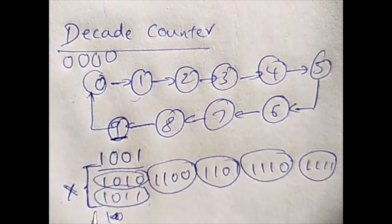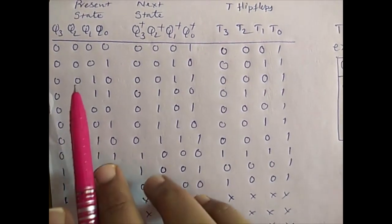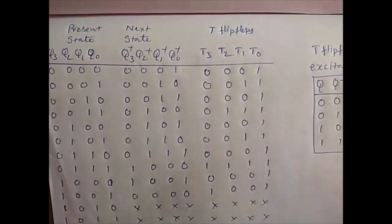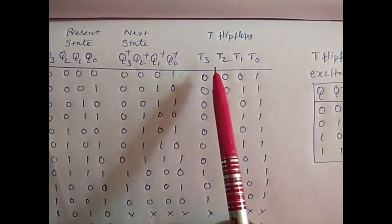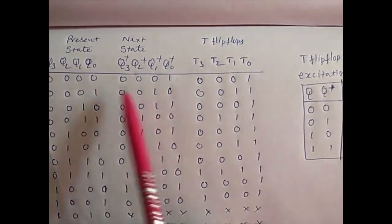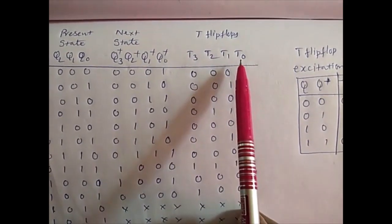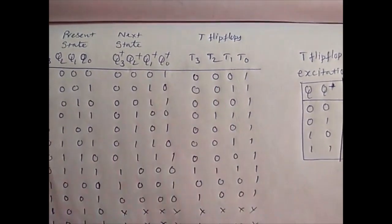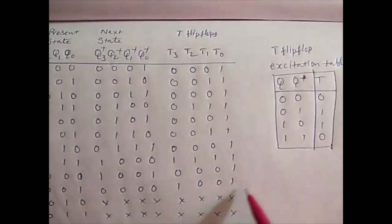After forming the present state versus next state table, the next step is to choose which flip-flop to use for realizing the decade counter. Let's assume we realize it using T flip-flops. We have four outputs, so it requires four flip-flops. The LSB is T0 and the MSB is T3.